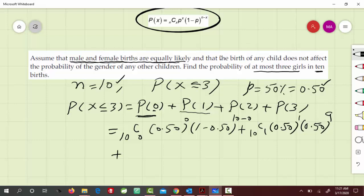Similarly, for P(2), that is 10 choose 2, 0.50 to the 2, and 1 minus 0.50 is 0.50, so 10 minus 2, that's equal to 8.